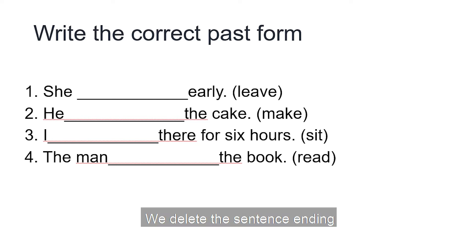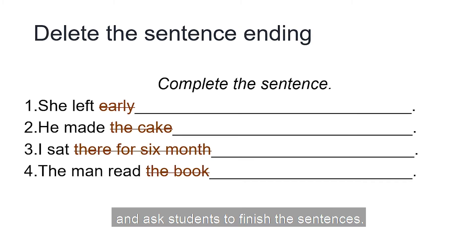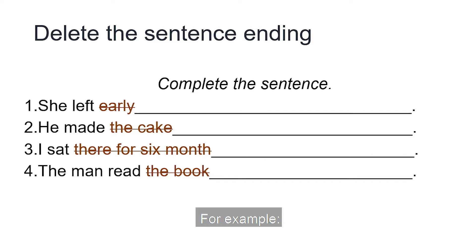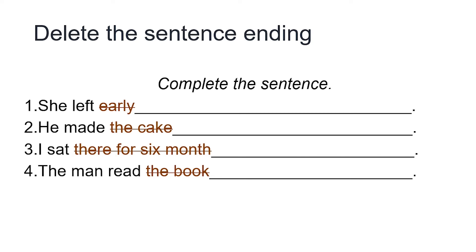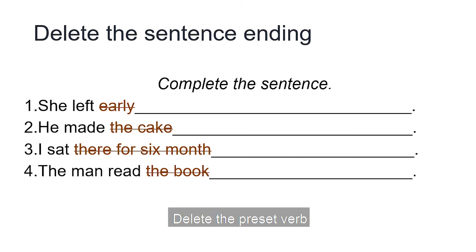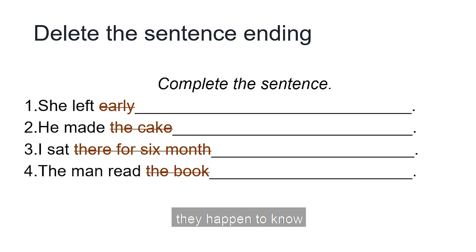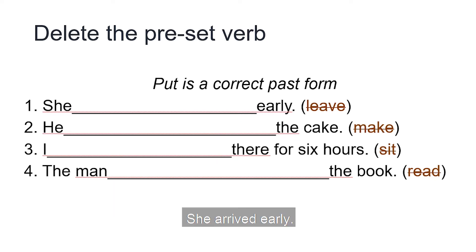We delete the sentence ending and ask students to finish the sentences — for example, 'She left what? Or when? Or how?' This gives us sentences of different levels. We can also delete the preset verb and ask students to use any verb they know in the past form — for example, 'She arrived early,' 'She got up early,' and so on.